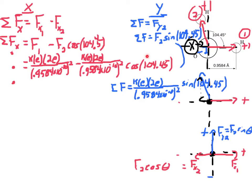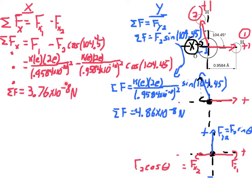Now I have stuff I can just punch into my calculator. Going back to adding vectors, I added up all my x's and all my y's. Once I punch everything into my calculator, the total of my x's is 3.76 × 10⁻⁸ newtons, and my y is 4.86 × 10⁻⁸ newtons.